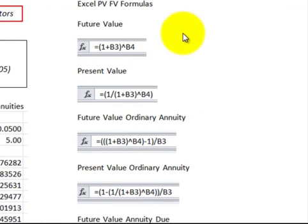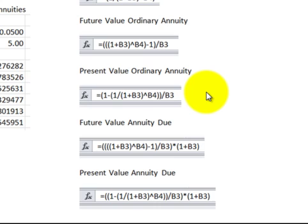So let's just scan through these things here. So we've got the future value formula here, the present value formula here, a future value of an ordinary annuity, the present value of an ordinary annuity, future value of an annuity due, and the present value of an annuity due.